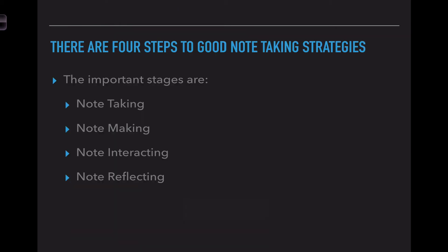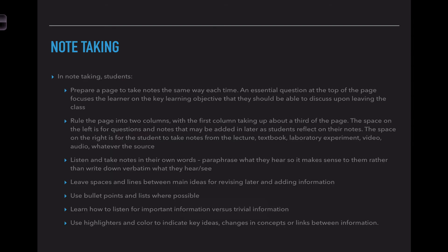So here are the four steps to good note taking strategies using Cornell notes: note taking, note making, note interacting, and note reflecting. When it comes to note taking, I know there's a lot on this slide but bear with me. You are preparing a page to take notes the same way each time. Having the structure is going to help you make sure that you are still achieving the same ideas as you go through your notes. You have the question or topic at the top of the page to focus on the key learning that's going to take place in this section. You're going to rule the page into two columns: the first column for your questions or key ideas or main topics, and the second column for your actual note taking section.